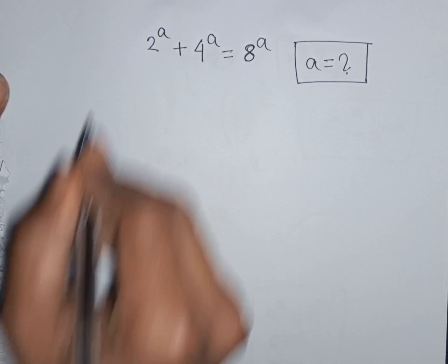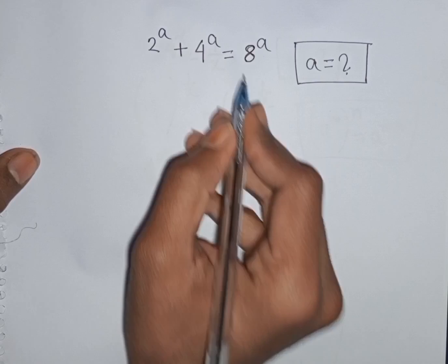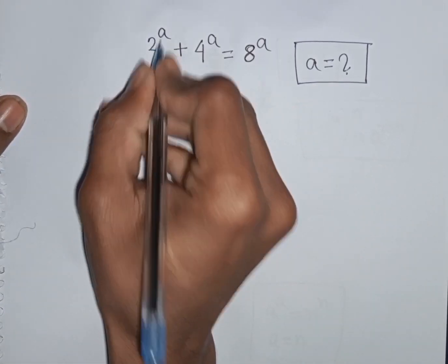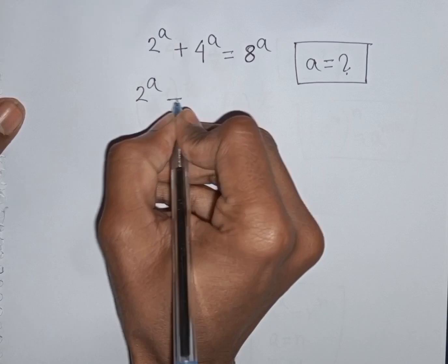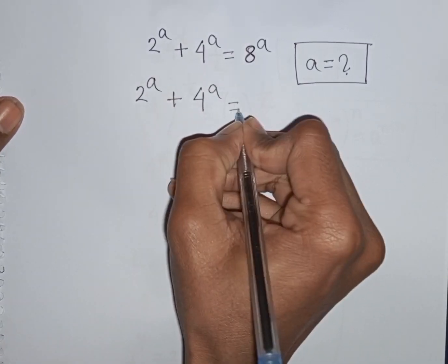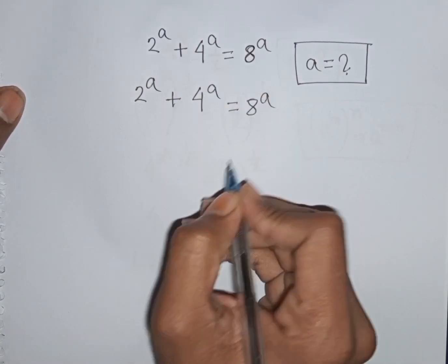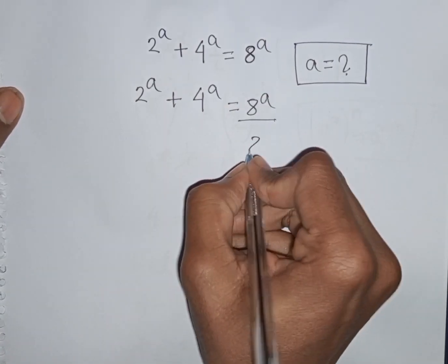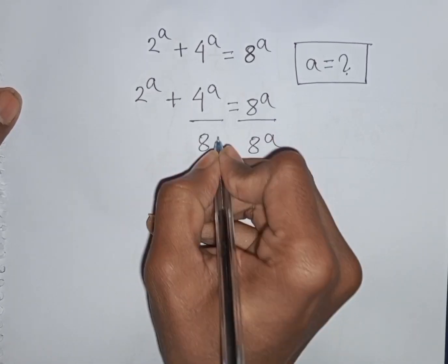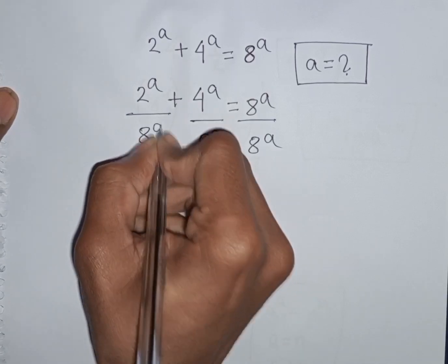How to solve 2^a + 4^a = 8^a. Find the value of a. We have 2^a plus 4^a is equal to 8^a. Now we divide both sides by 8^a.